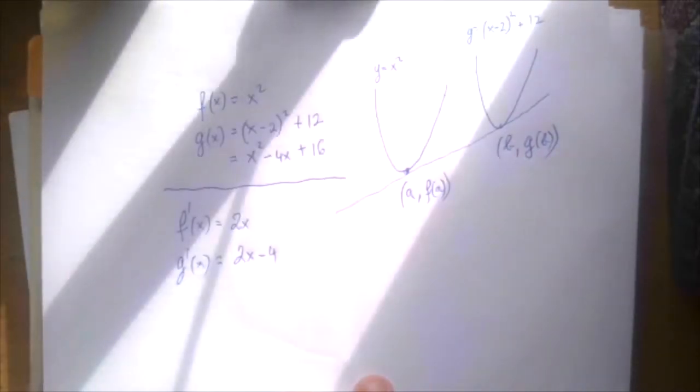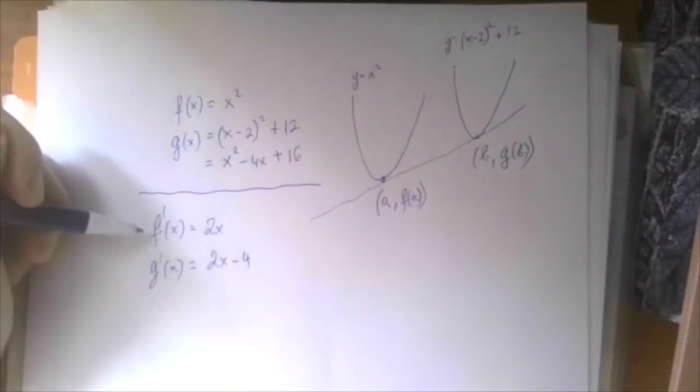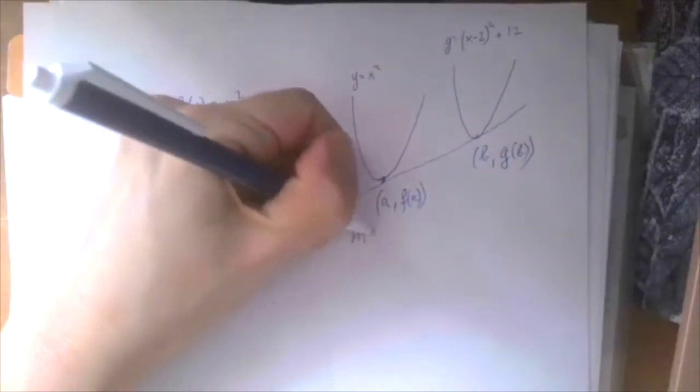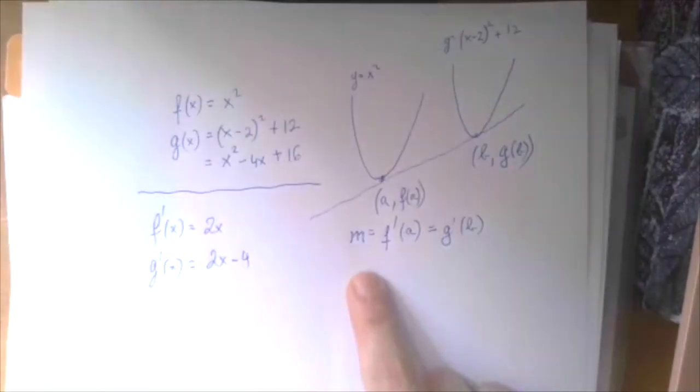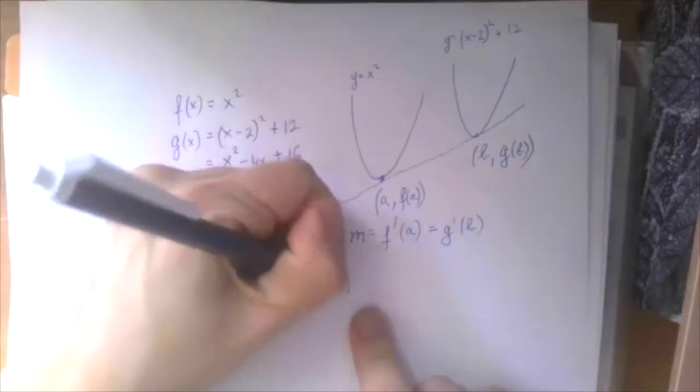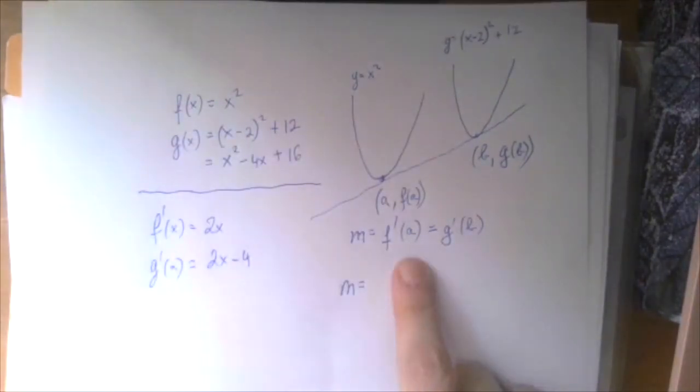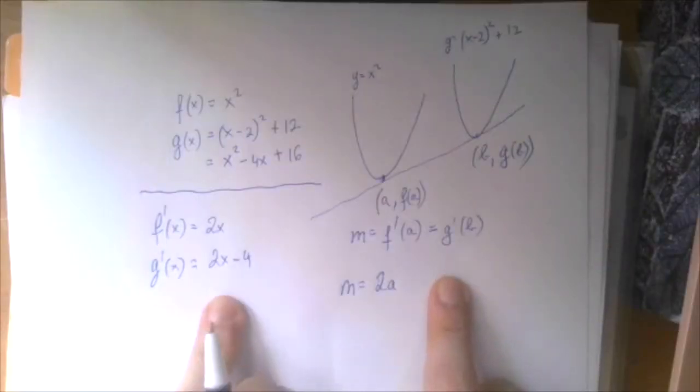And so if we evaluate the first function's derivative at A, that should be the slope. So this slope should be f prime at A and g prime at B. That means the slope of this line should be f prime of A is just 2a and g prime of B is 2b minus 4.